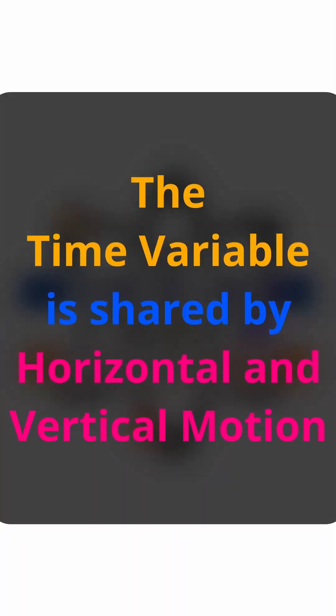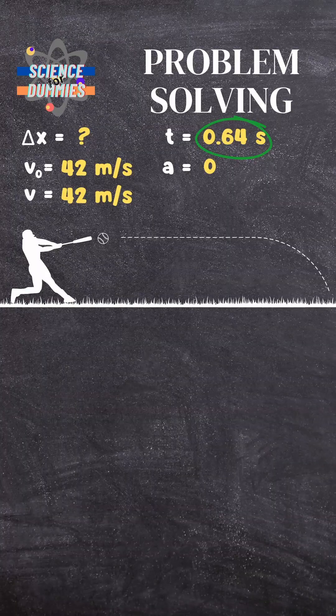Although the vertical and horizontal motions of a projectile are independent of each other, the time variable is shared by them. We can use our computed t and plug it in the variables for horizontal motion, like so.